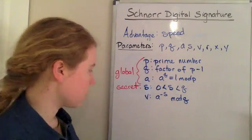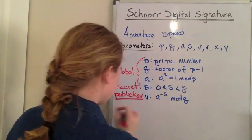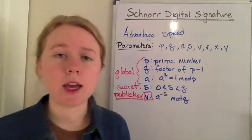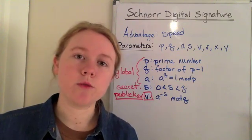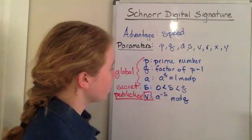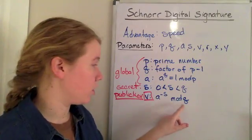And then the v is our public key. So this v value here is what we post online to allow somebody to verify our signature. It is our a value to the negative s, mod q, not mod p, mod q.